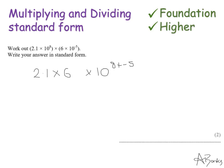So I've just got to work this out now. So 2.1 times 6. Well that's 12.6 times 10 to the power of. And 8 add minus 5 is the same as 8 minus 5. So that's 3. I'm not quite finished here because this isn't in correct standard form yet. We know that standard form, this first number has to be between 1 and 10.